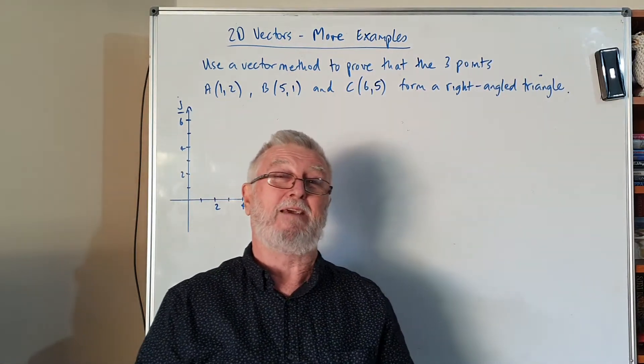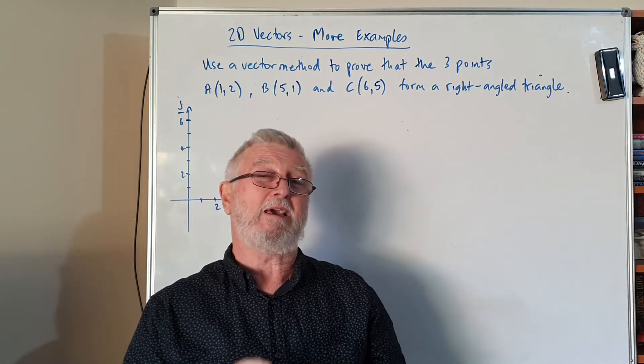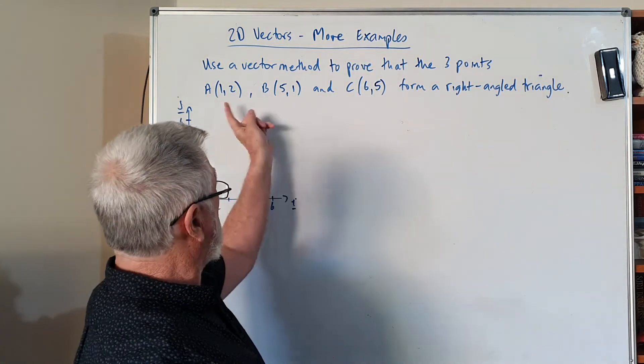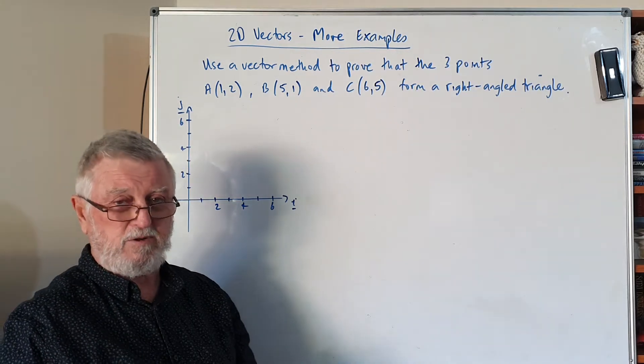Hi everyone, welcome back. If you want to support what I'm doing, please press like and subscribe. Looking at how do I get three points and show using a vector method that forms a right angle triangle.